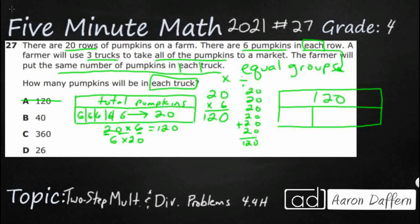And the farmer's going to use three trucks. And look at this. The same number of pumpkins in each truck. So I've got more equal groups. So I could possibly solve it like this. Three groups of whatever. We might be able to figure that out. Equals 120.